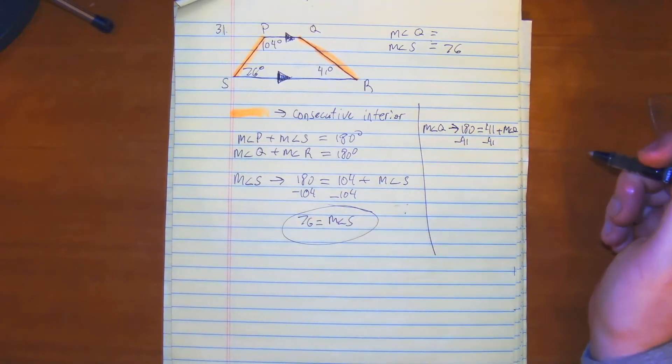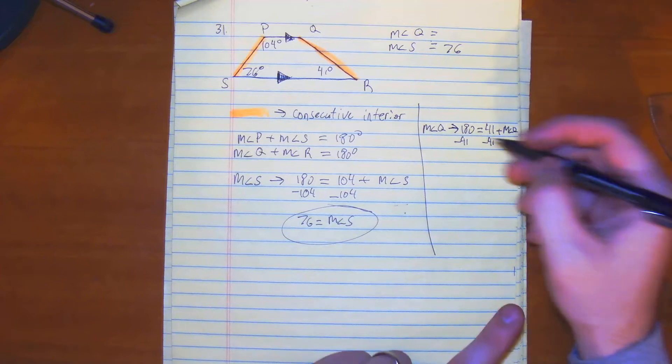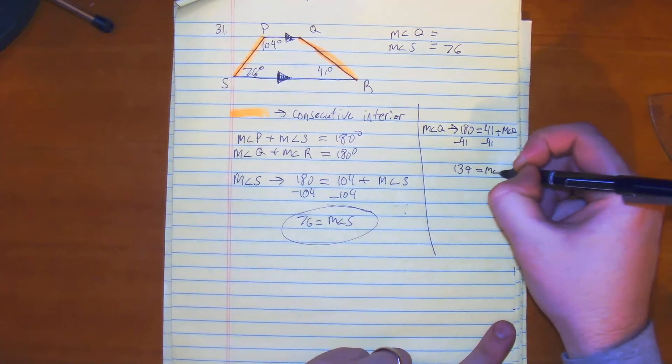Subtract 41. 180 minus 41 would be 139. So 139 equals the measure of angle Q.